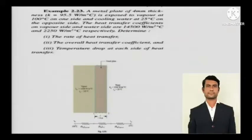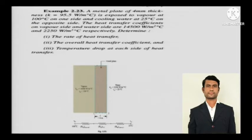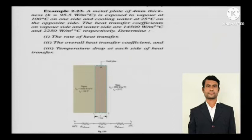A metal plate of 4 mm thickness, k equals 95.5 watts per meter degree Celsius, is exposed to vapor at 100 degrees Celsius on one side and cooling water at 25 degrees Celsius on the opposite side. The heat transfer coefficient on the vapor side is 14,500 watts per meter square degree Celsius and on the water side is 2250 watts per meter square degree Celsius. Determine: the rate of heat transfer, the overall heat transfer coefficient, and the temperature drop at each side.